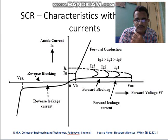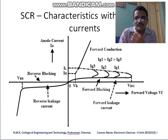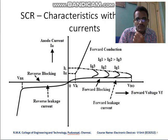The curves show three different gate current values — as gate voltage increases, gate current increases, and this is how we trigger the SCR. In reverse blocking mode, the SCR acts like a P-N junction diode, exhibiting reverse leakage current and eventually reaching an avalanche breakdown point.